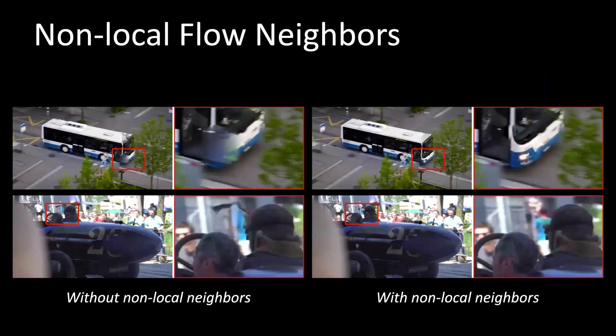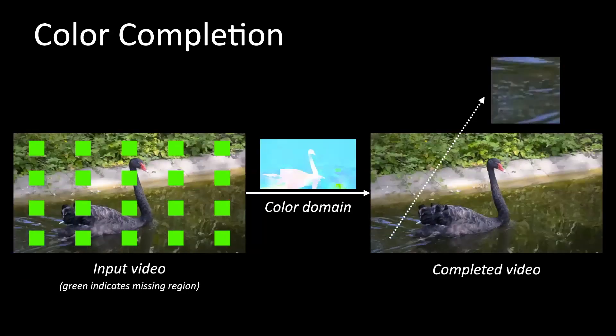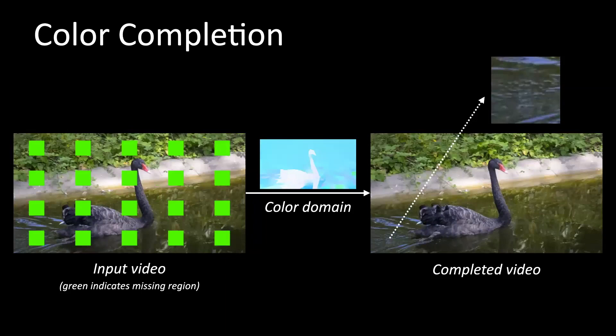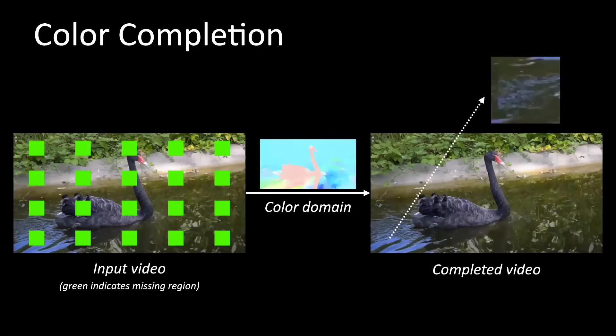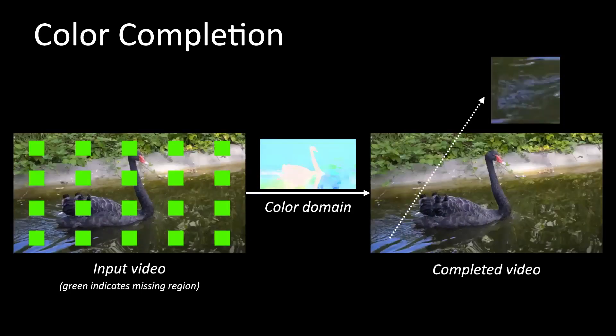Here we show the effectiveness of our non-local flow neighbors. By propagating color along the flow trajectory, we complete the video. However, directly propagating color results in visible seams. Thus, we propose to operate in the gradient domain for seamless results.